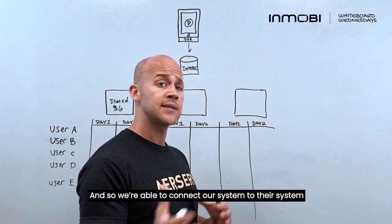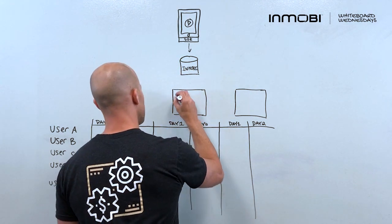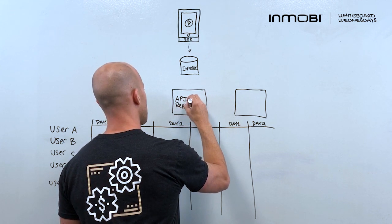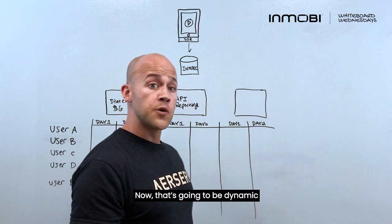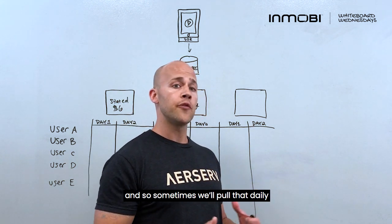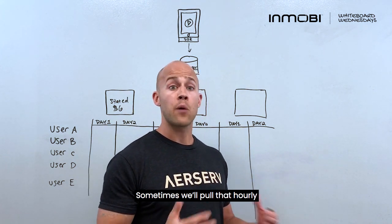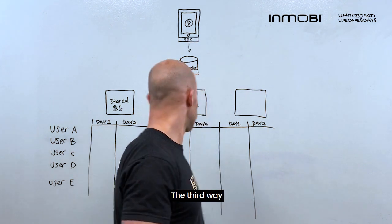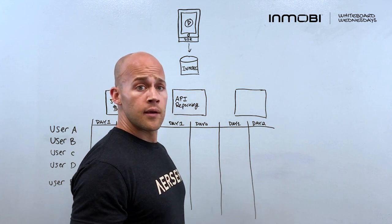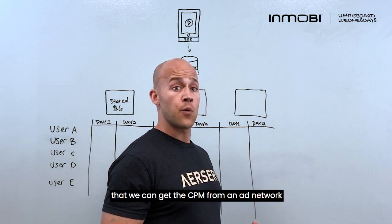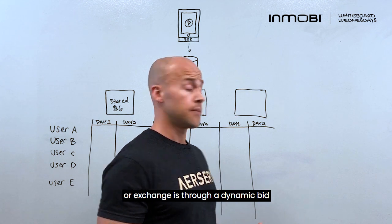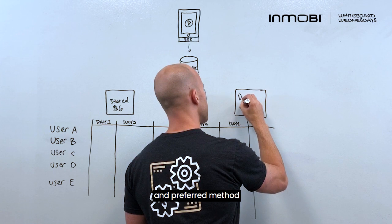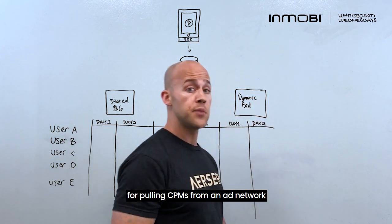We're able to connect our system to their system, and that's going to be dynamic. Sometimes we'll pull that daily, sometimes hourly, based on the parameters and limitations of that particular ad network. The third way that we can get the CPM from an ad network or an exchange is through a dynamic bid, and that's the third and preferred method for pulling CPMs from an ad network.